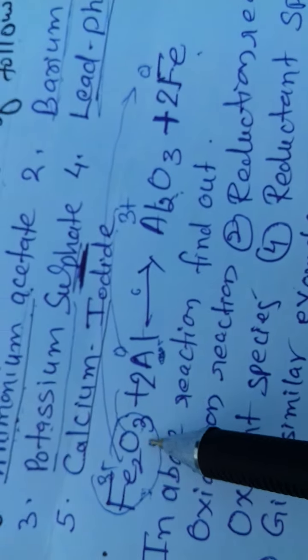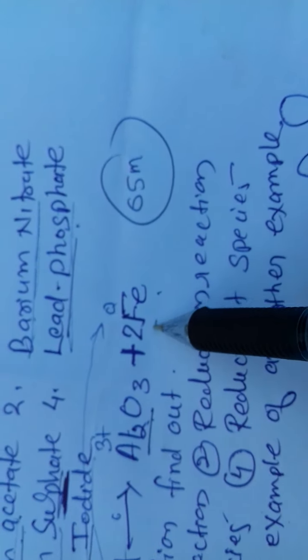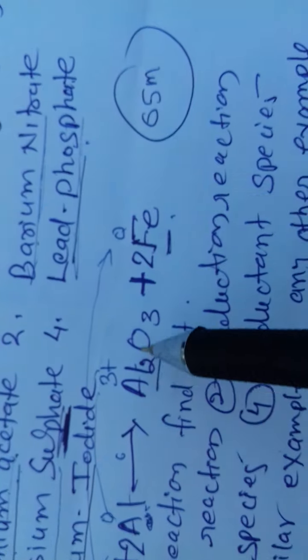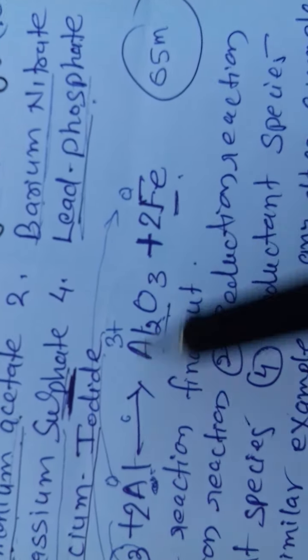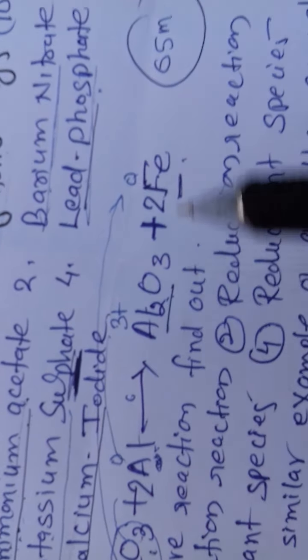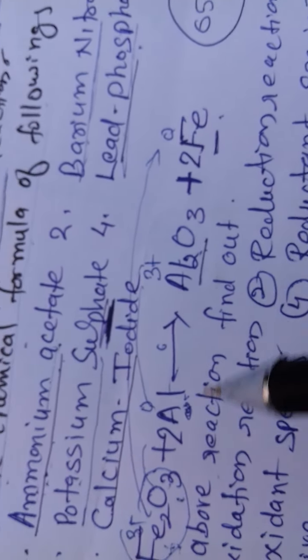And last, in this reaction aluminum is reacting with ferric oxide. It is replacing of iron and forming aluminum oxide along with iron. Observe carefully this reaction. And for this reaction, question is five marks question.